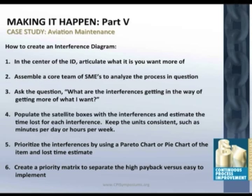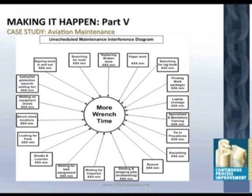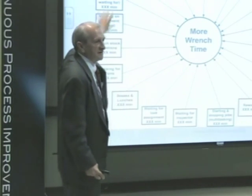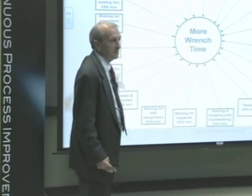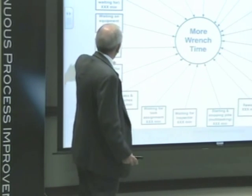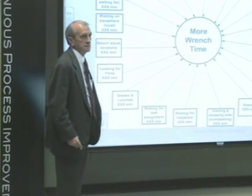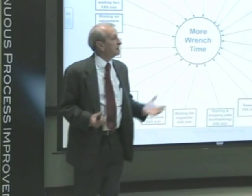Here's what it looked like. One of the things that's important is you want not only the interference but also how much time you're losing because of that interference. That makes sense, right? We can't possibly fix all these immediately. But if we put a time element with each interference, then we could create some kind of priority order.